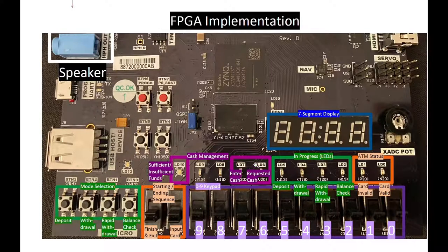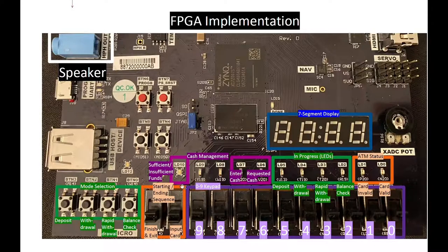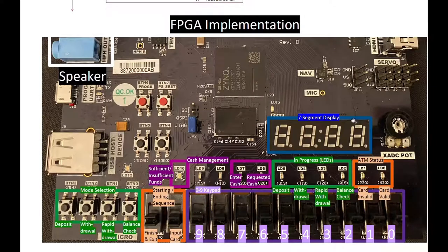We also have our ten switches for the zero through nine keypad, used to enter a PIN or cash amounts. LEDs seven and six respectively indicate the cash entered and the requested cash, serving as notifications for whether funds were insufficient or sufficient — whether the user can take cash or needs to deposit it. Lastly, we have a seven-segment display showing previous transactions, the PIN entered at startup, and the cash amount to withdraw or deposit.